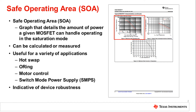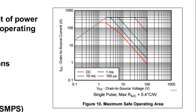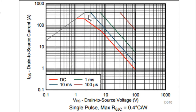Let's begin by defining what exactly the safe operating area is. The SOA is shown here in figure 10 of most of our discrete data sheets. It is defined as the figure that details the amount of power the FET can handle when it's operating in the saturation region, which I'll discuss a little bit more momentarily.